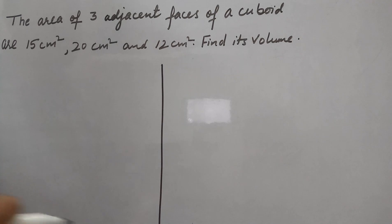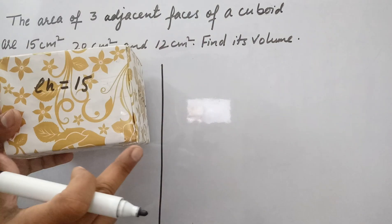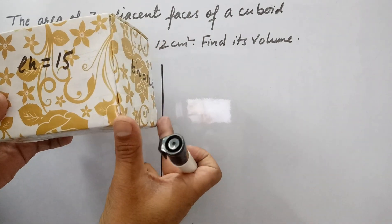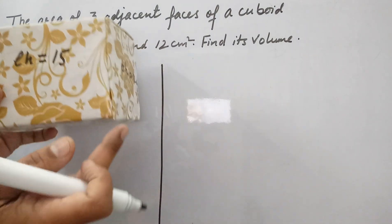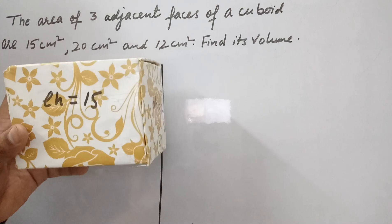So for solving this question, let me show this cuboid. This is the cuboid with length, breadth, and height. This is height, length, this is breadth, this is height. We know each face of a cuboid is a rectangle.